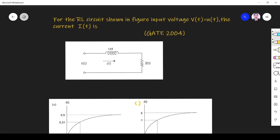Hi friends, let us discuss a transient response question asked in the 2004 EC paper. For the circuit shown in figure, input voltage V(t) equals U(t). What is the current I(t)? That's what they are asking.